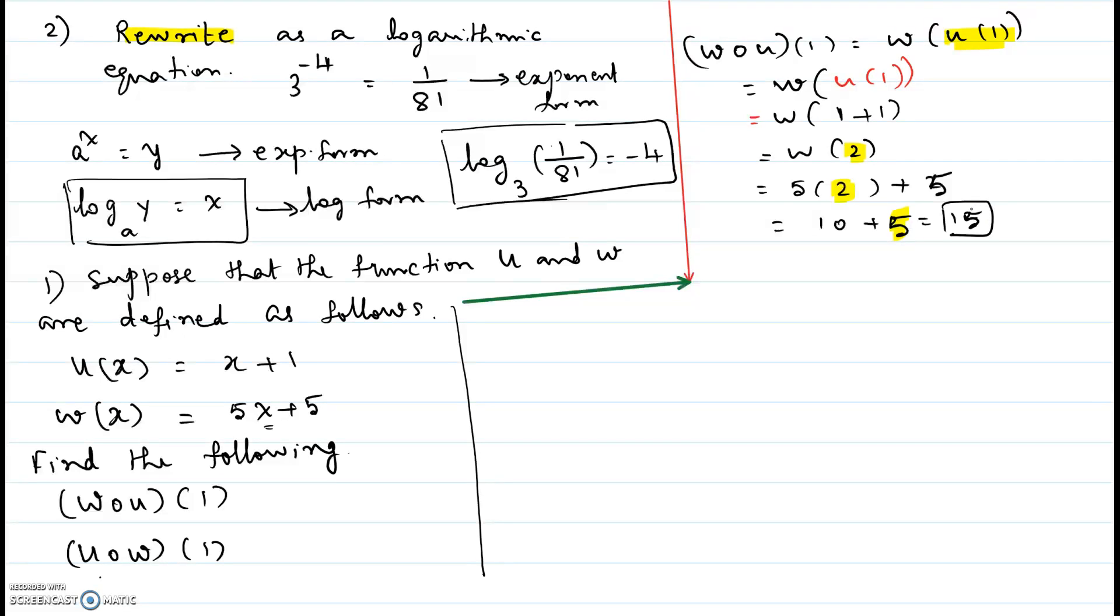Now let's try u composite w of 1. So u of w at 1. So start off with the inside one which is w at 1.